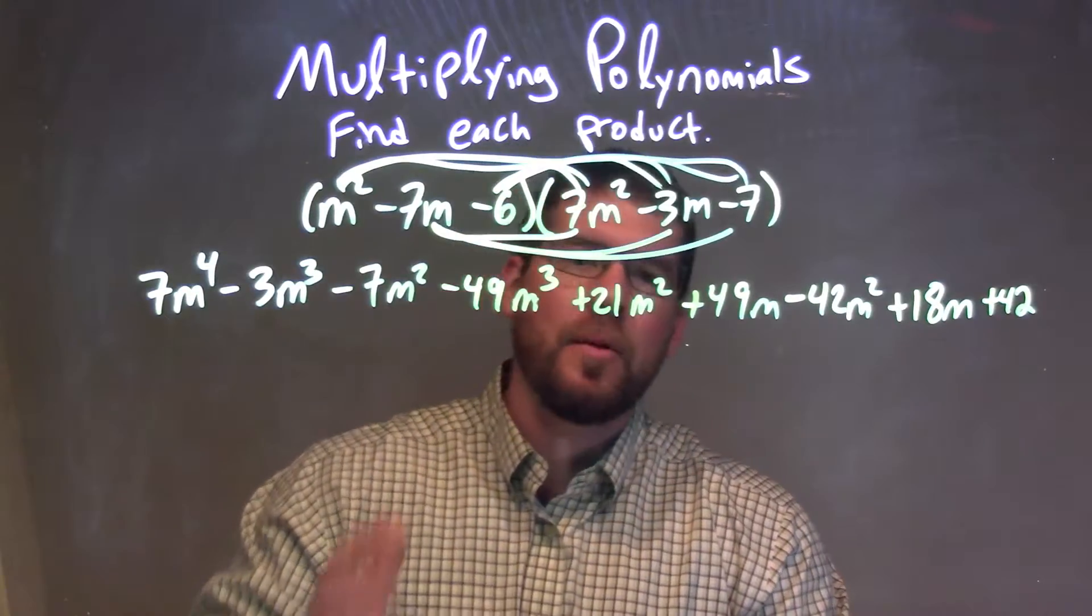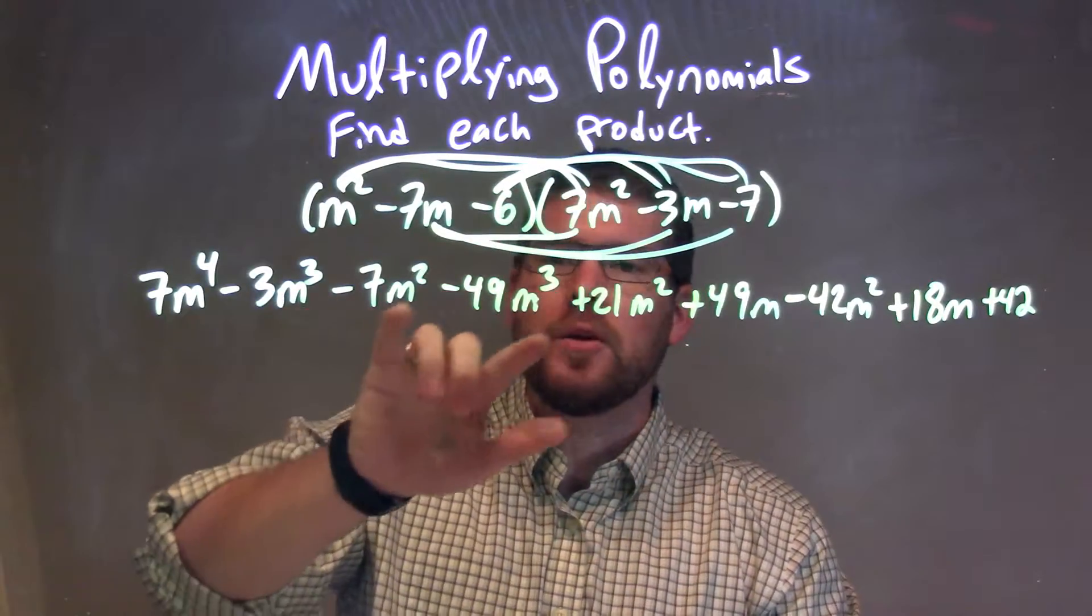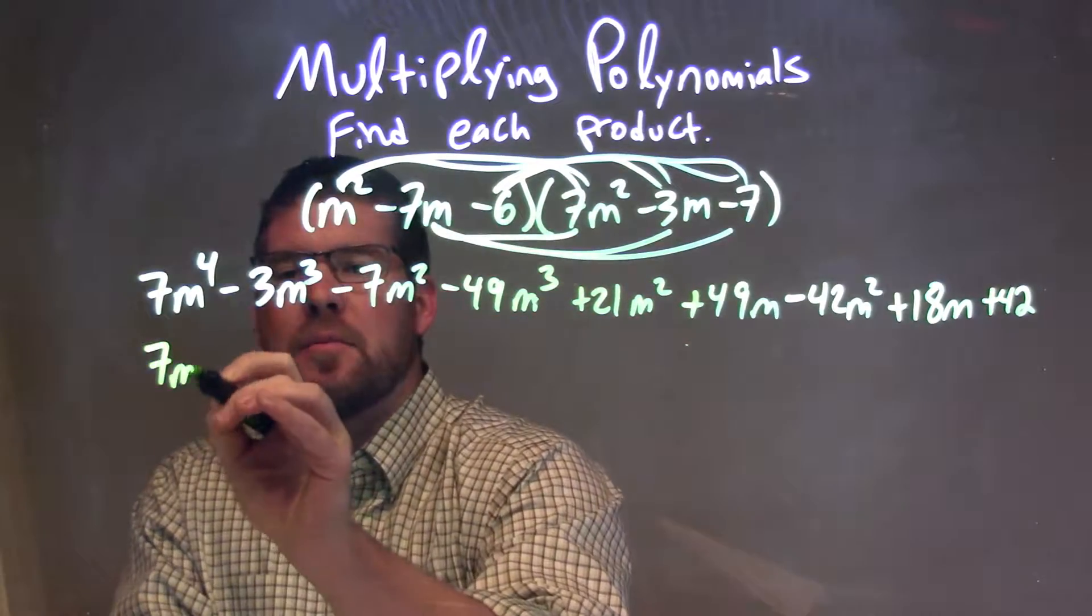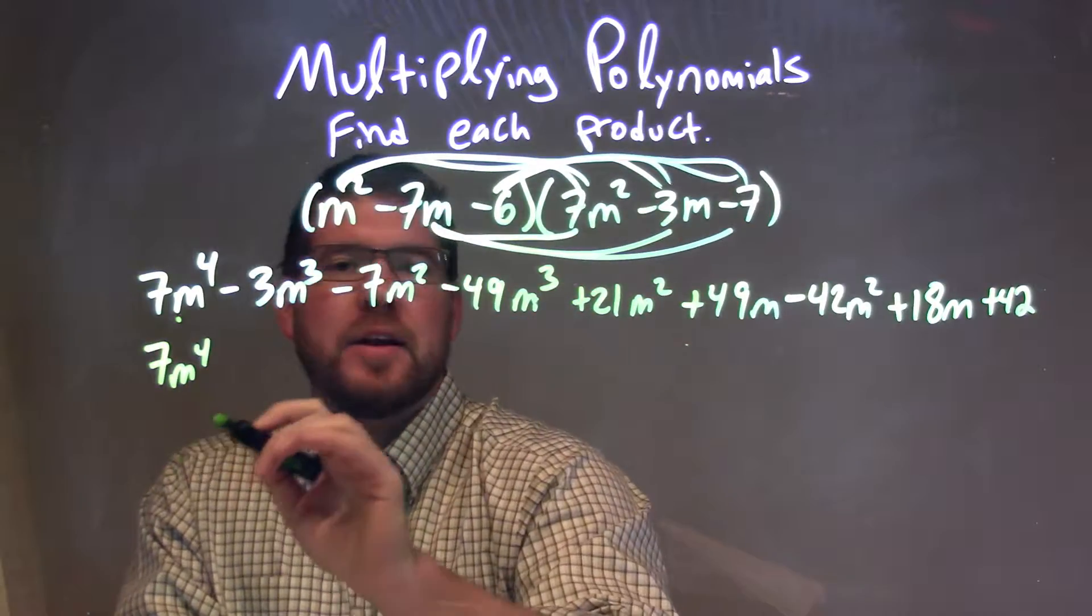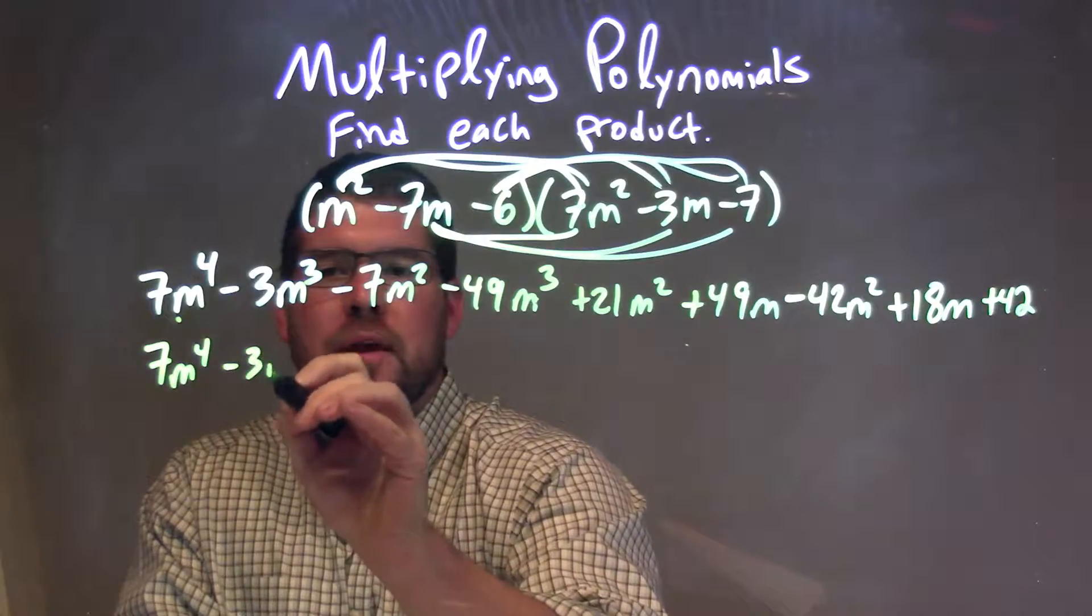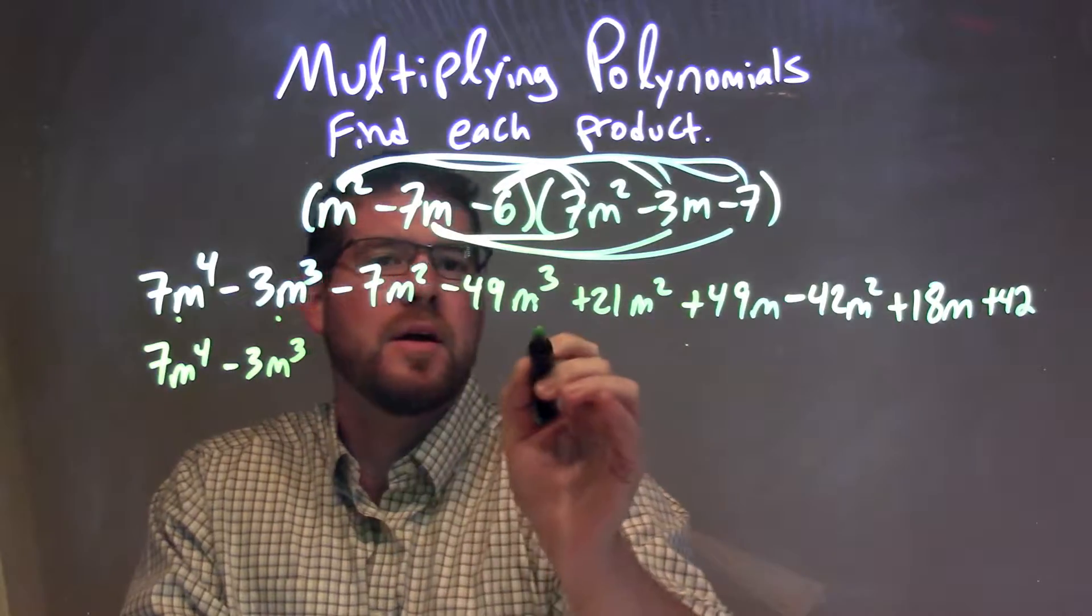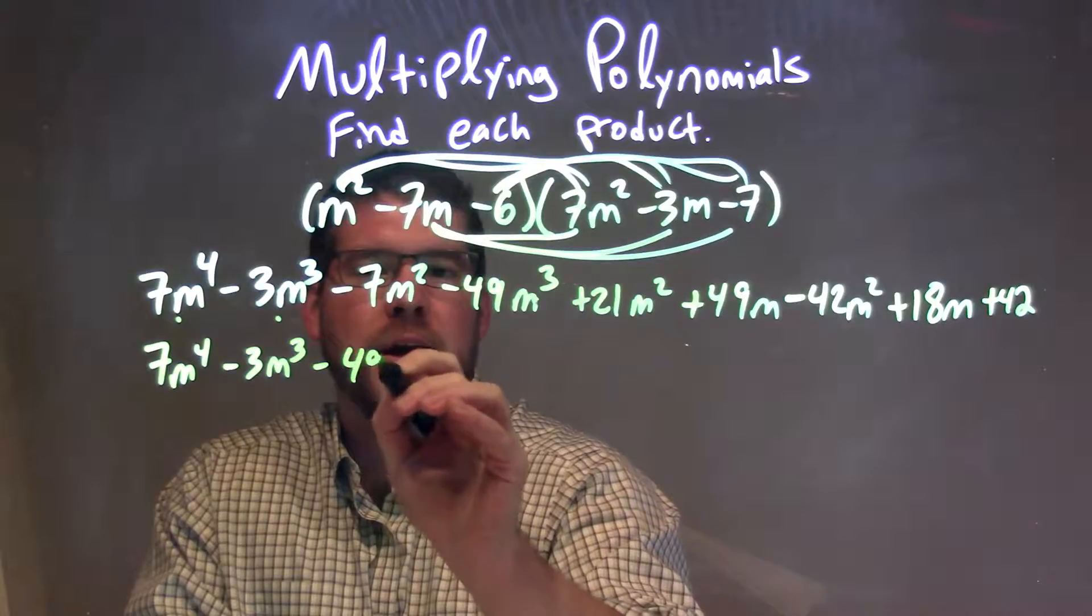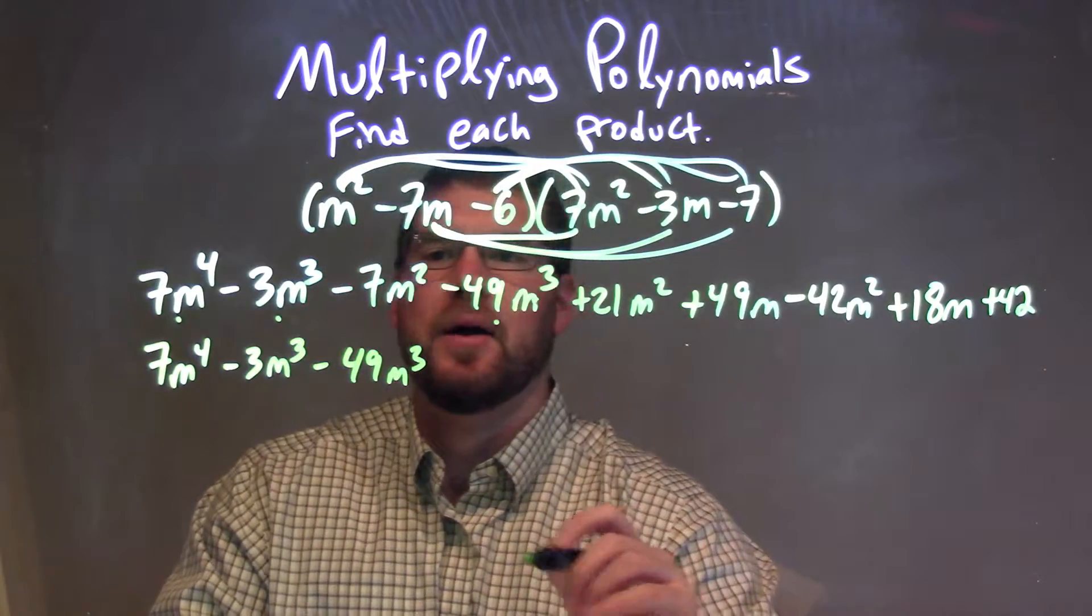So now let's combine our like terms. We can't really get there fully but let's rearrange so parts of like terms are next to each other. So we have 7m to the fourth power. Let's go to third power: minus 3m to the third, minus 49m to the third, and nothing else to the third power.